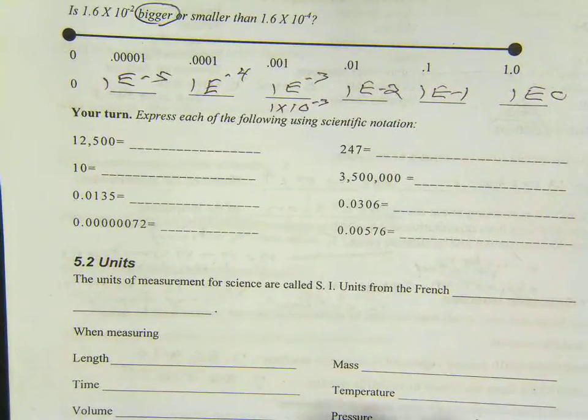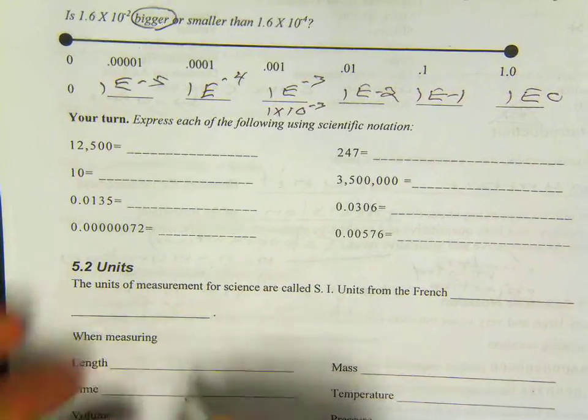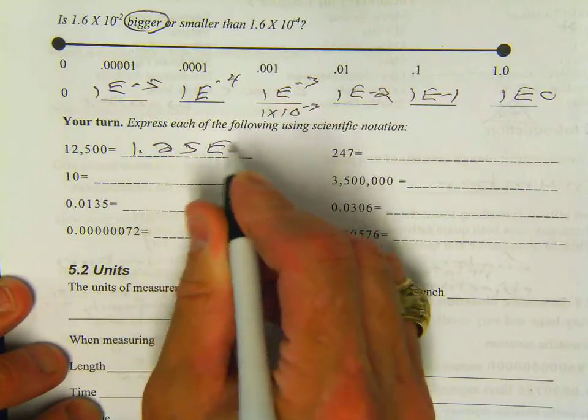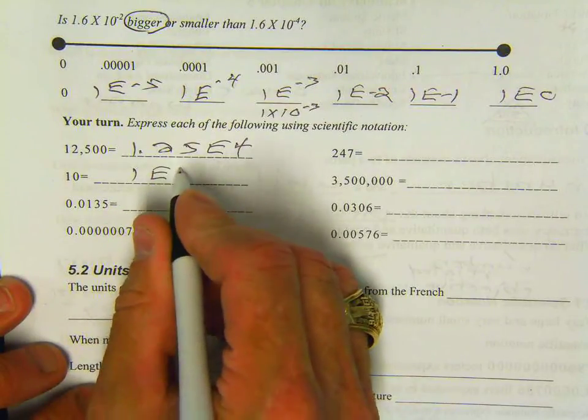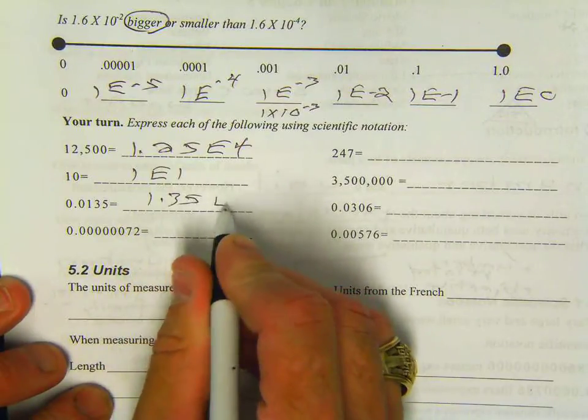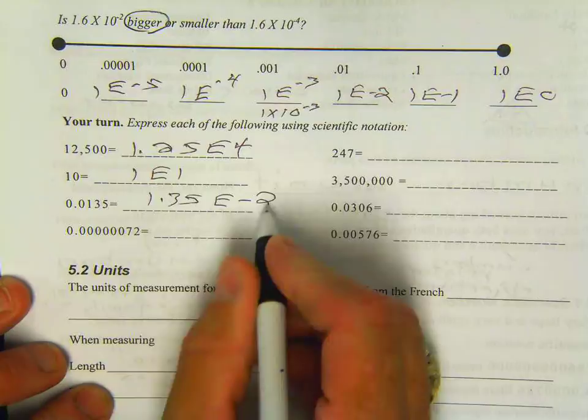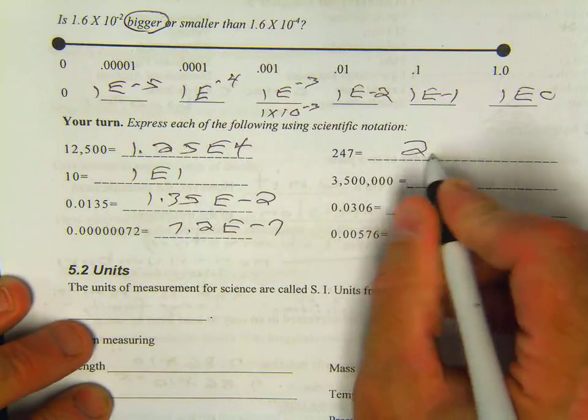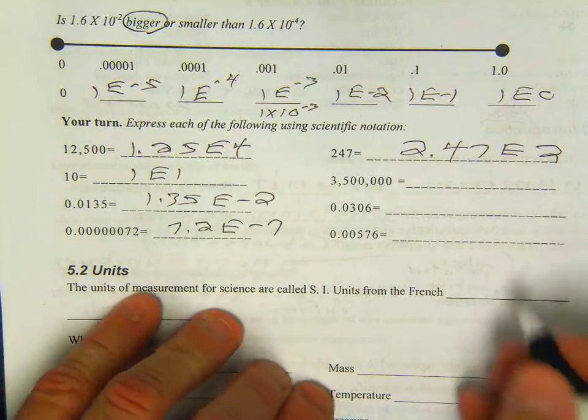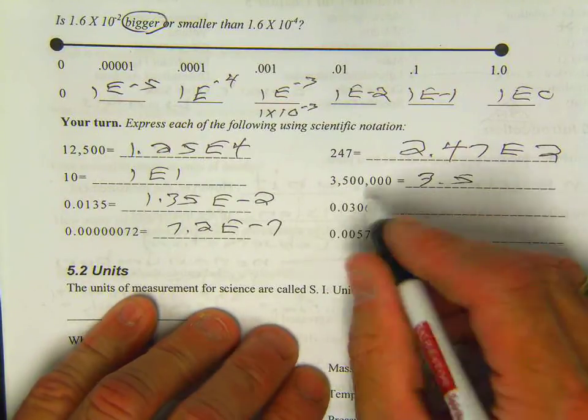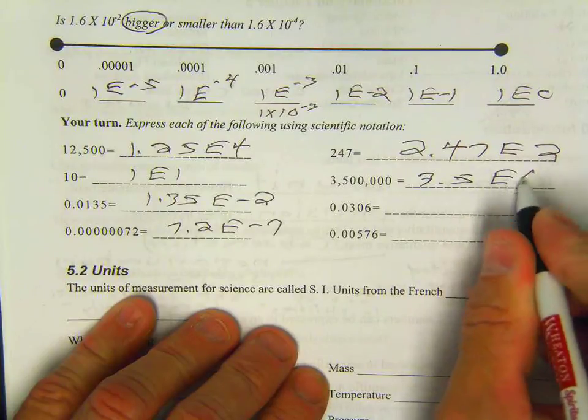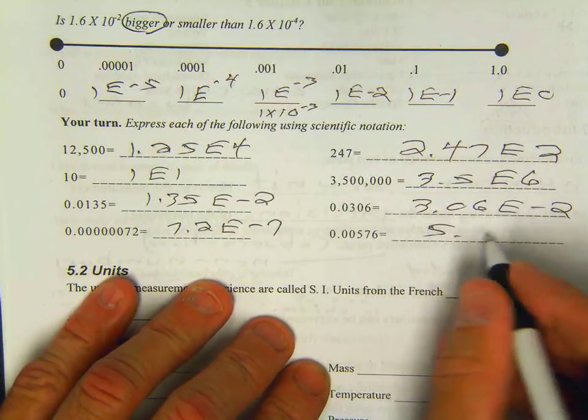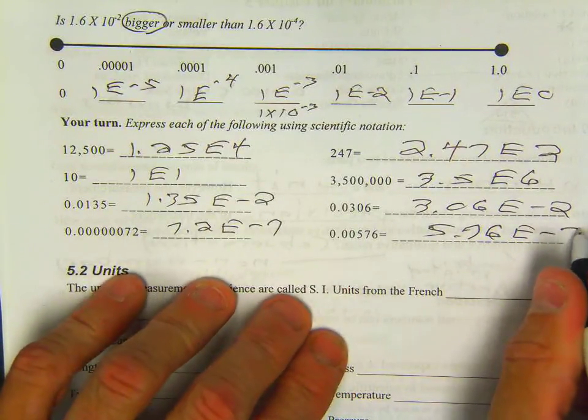Your turn. What you need to do is shut the video off now and try these and see how well you do, then compare answers after that. I'm going to go ahead and throw some answers on here. 1.25e1, 1e4, 1.35e-2, 3.06e-2, 5.76e-3. 2.47e2, 3.5e6, 3.06e-2, 5.76e-3. So check it.